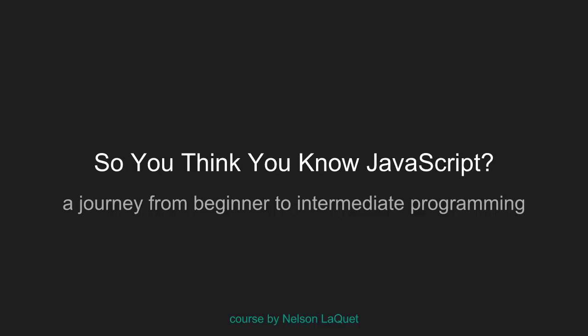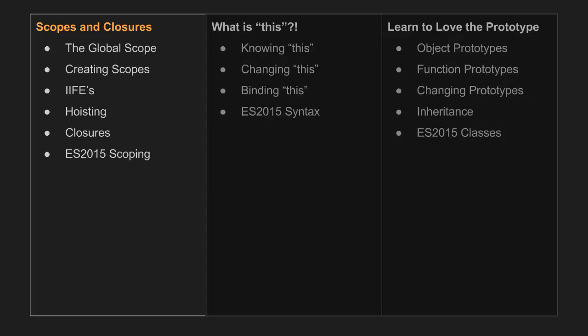Let's take a look at what we're going to be covering. The course is broken into three different sections. The first section is all about scopes and closures — something that people often get messed up, especially if they are relatively new to the language. The questions you always want to be able to answer are: where does your data live? When is it in scope? When is it out of scope? When are scopes created? What are scopes? All of those questions are answered in this section.